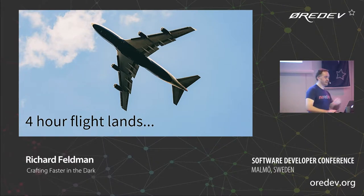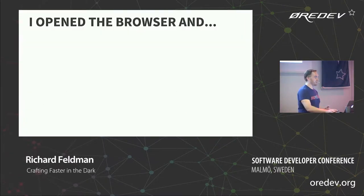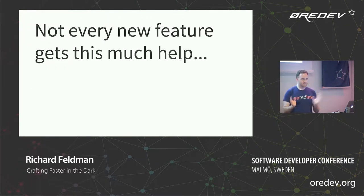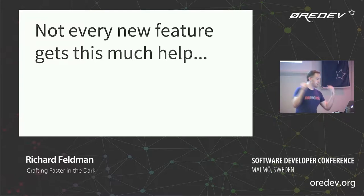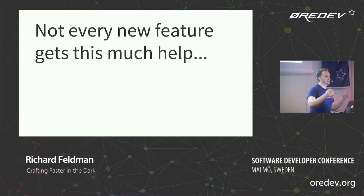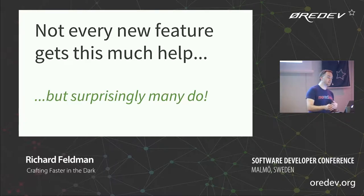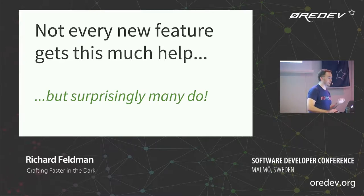So when the flight landed, I opened the browser and it all worked. Not every feature gets this much help, to be fair — this was a pretty straightforward feature to implement. But surprisingly, many of them actually do get that much help. It's a very common experience to get that level of compiler support for what you're working on. And the reason is that modifying existing code — like we did here — is pretty much the type of stuff we do all the time.